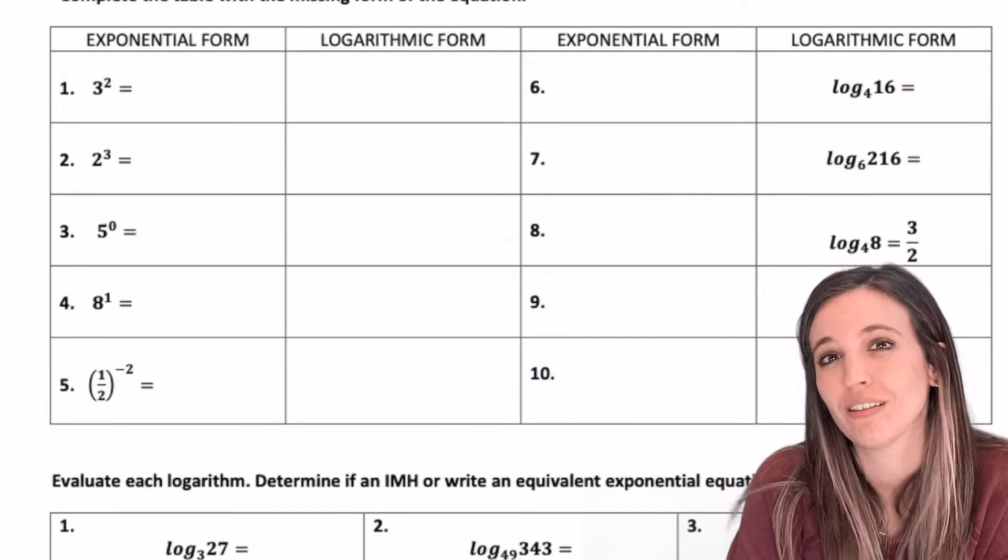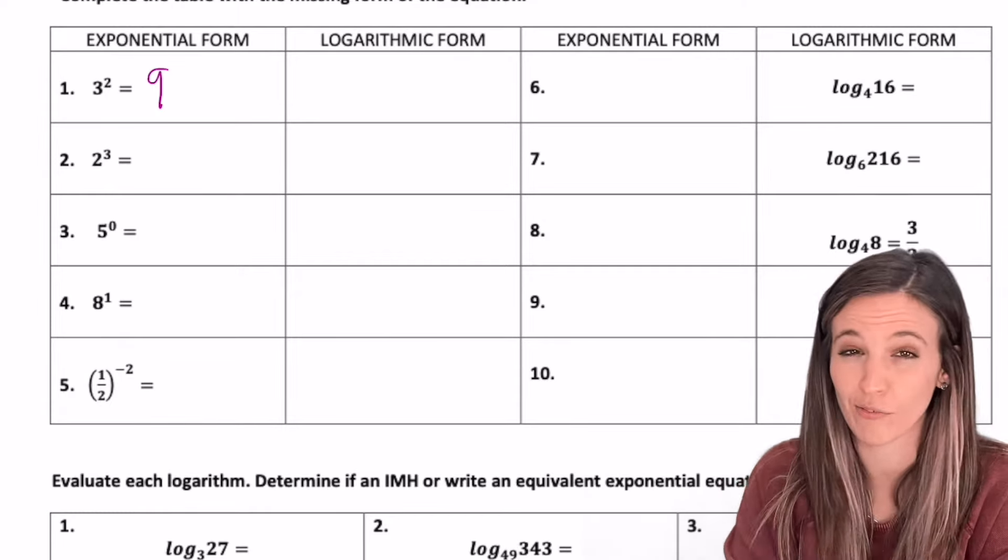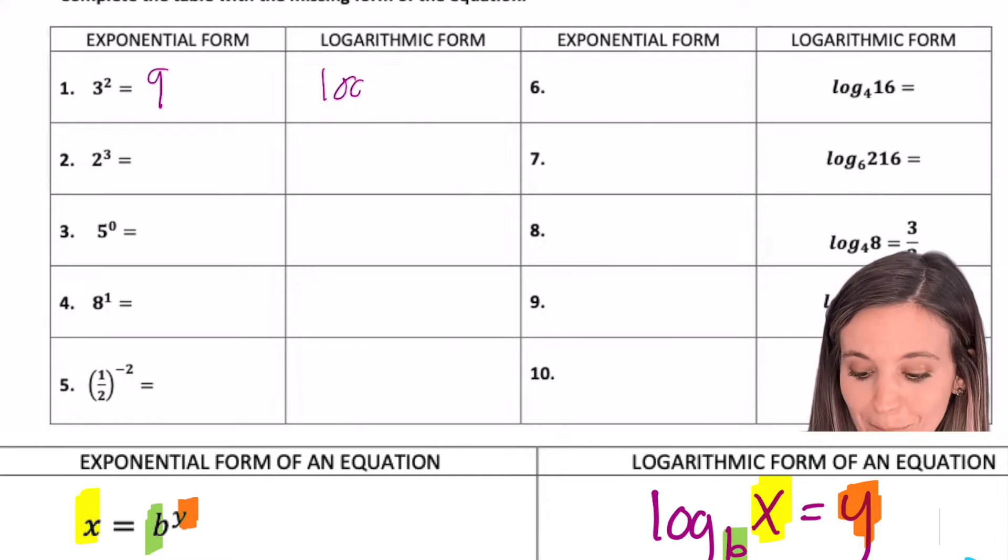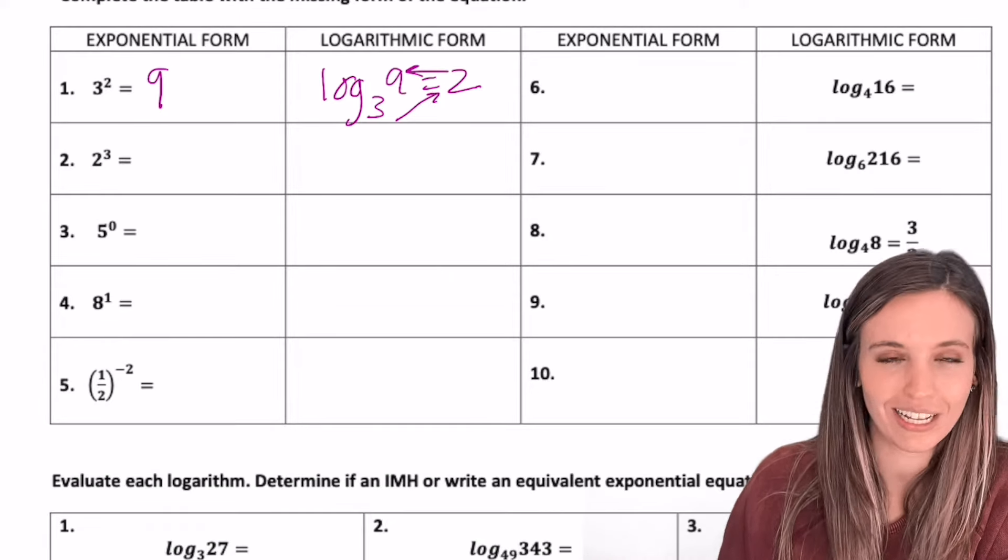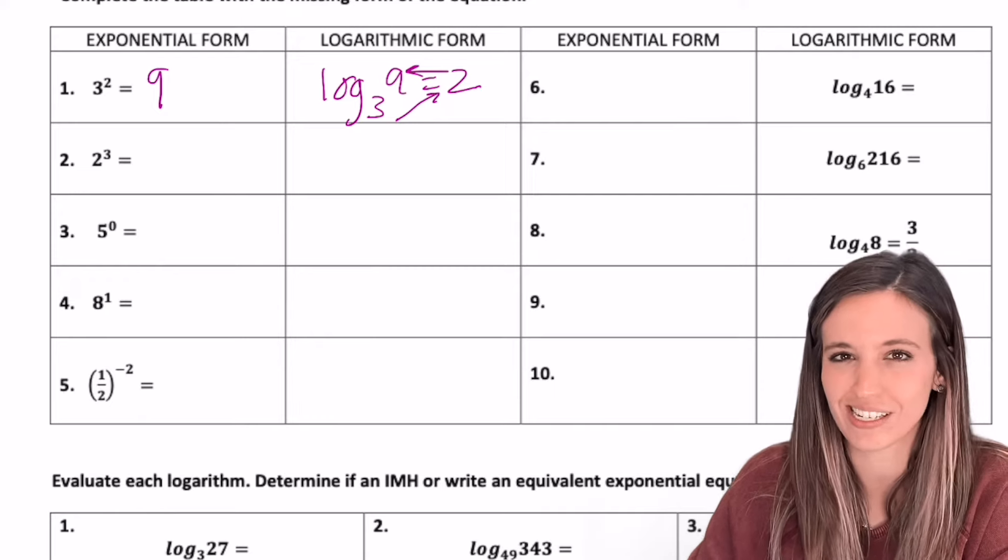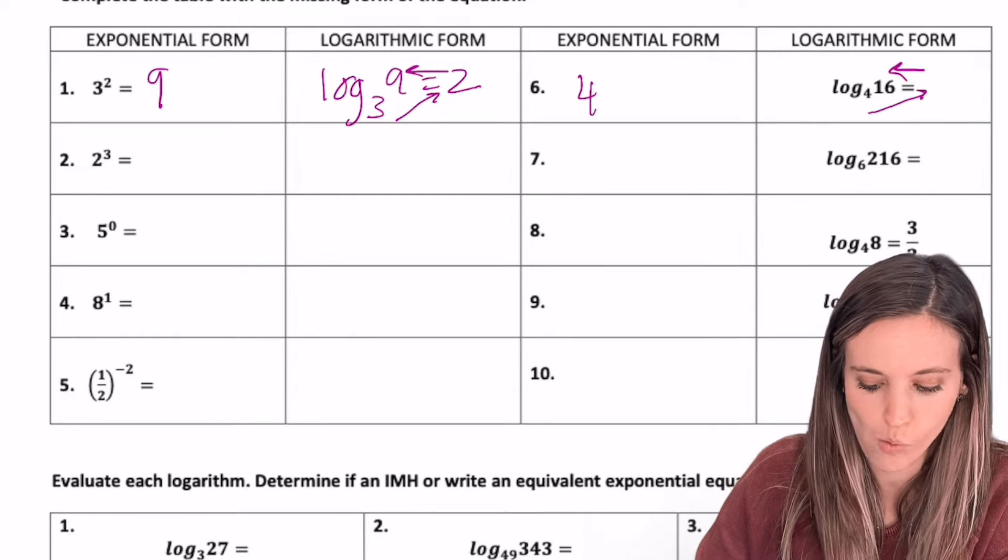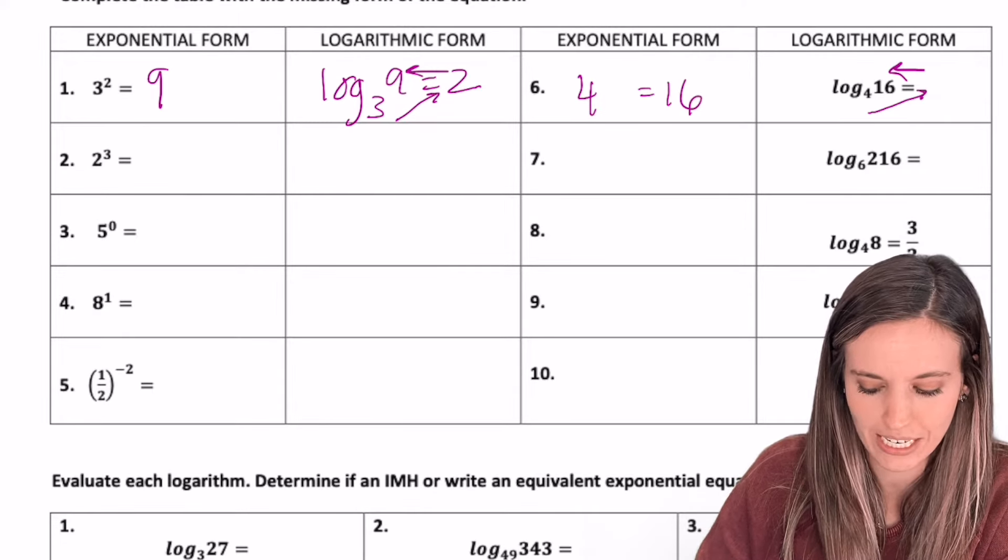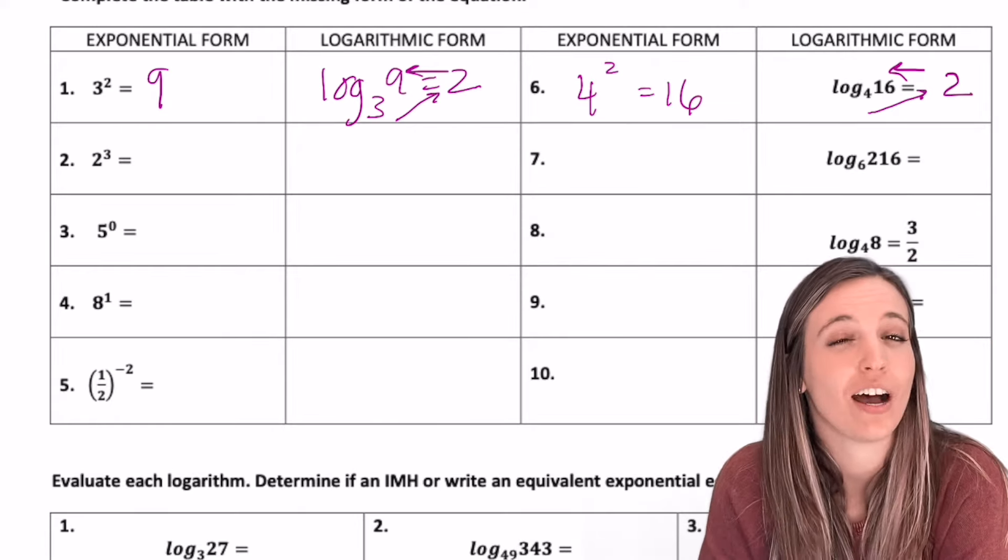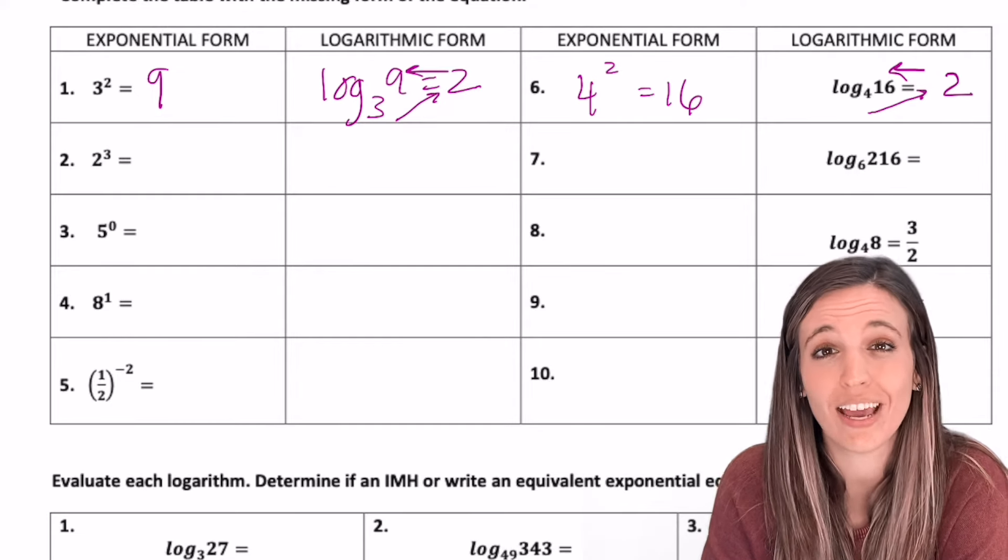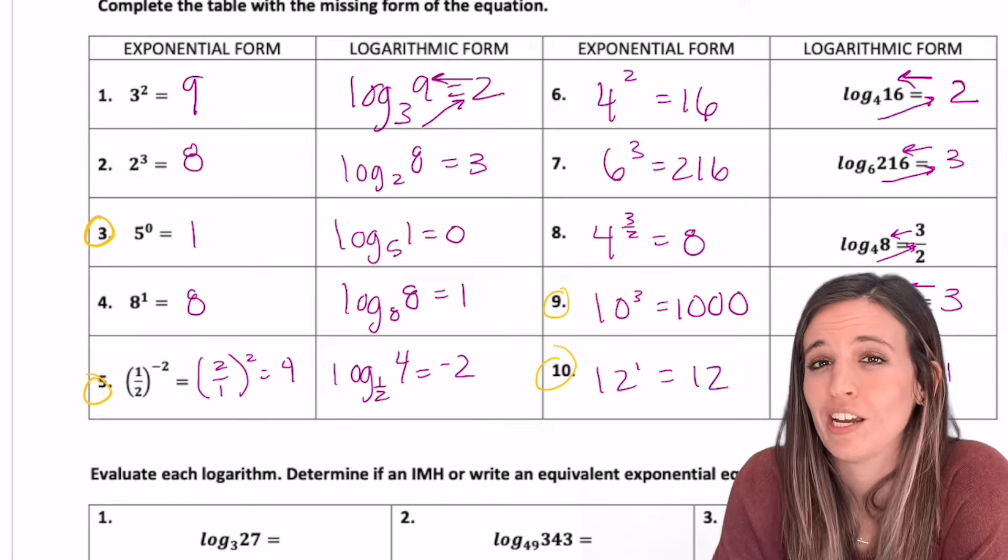Let's see if we can practice switching between logarithmic form and exponential form. This first column, we're starting with three squared. Well, we know that's nine. Can we convert this to logarithmic form? Well, we know that log base three of nine equals two, right? Because three to the second power is nine. Let's try the other direction. Log base four of 16 equals, okay, well, four to what power is 16? Four to what equals 16? Well, squared. So four squared equals 16 is our exponential form. Take the time here to understand, not just memorize. Complete the table.